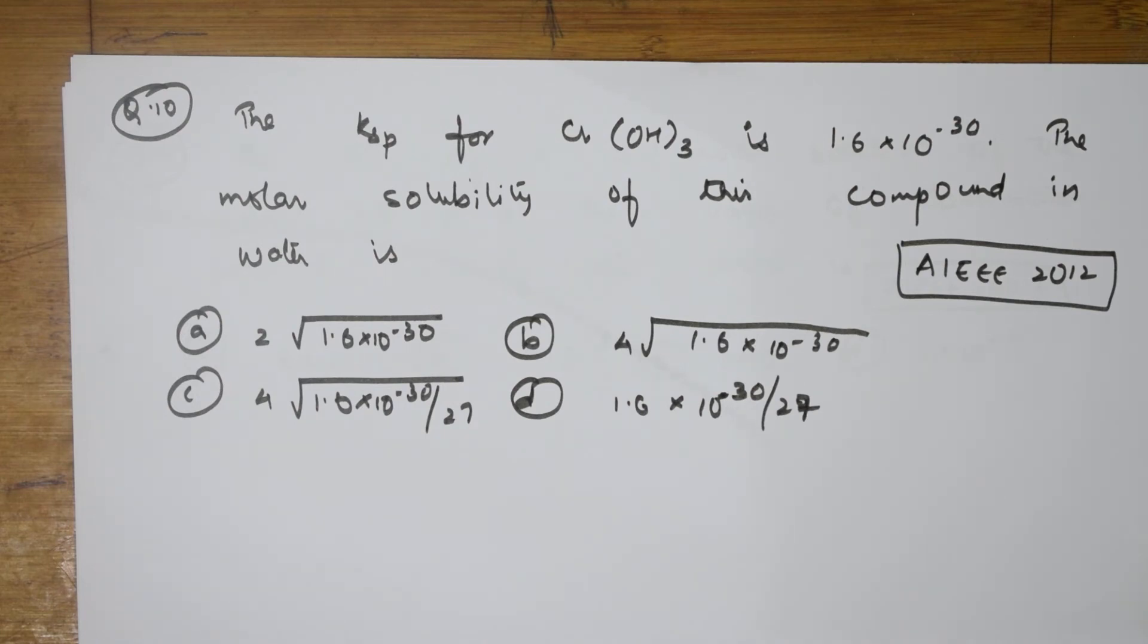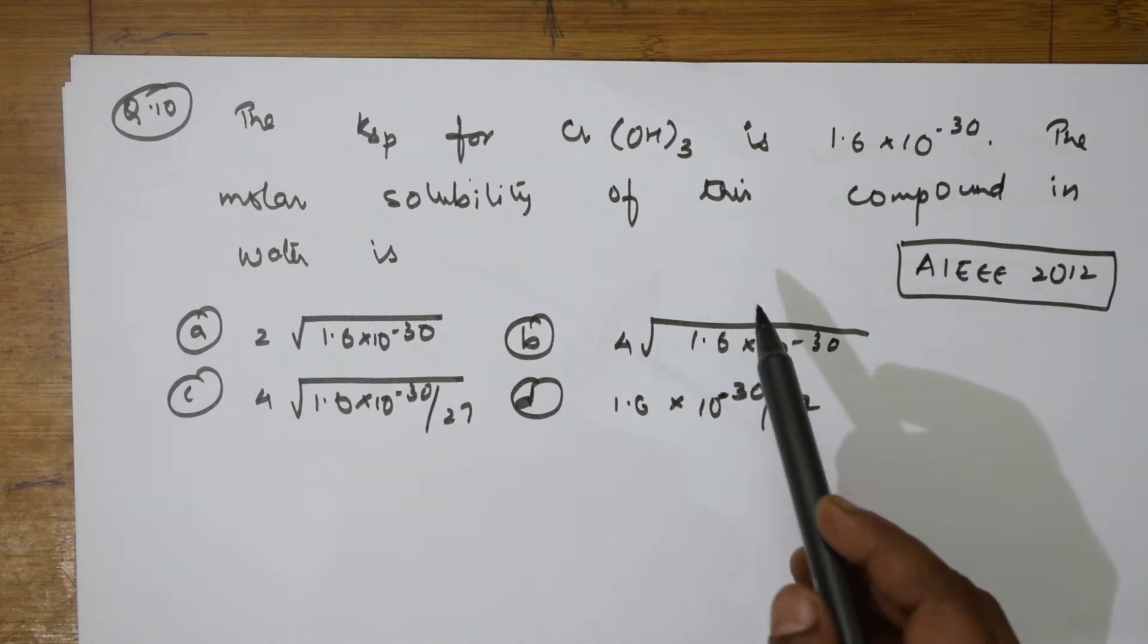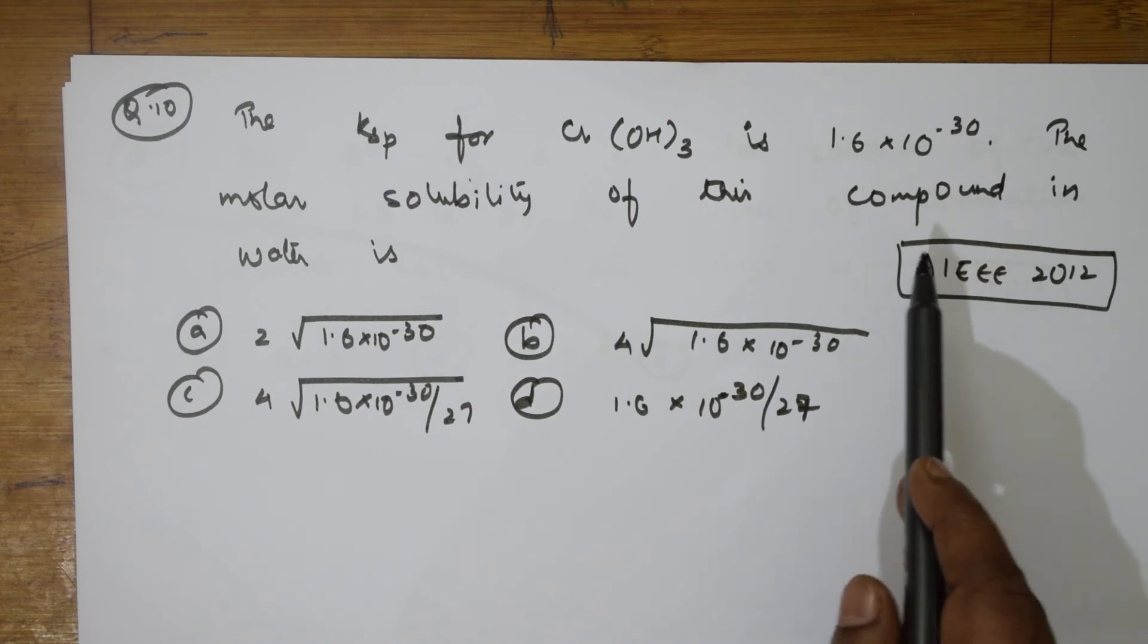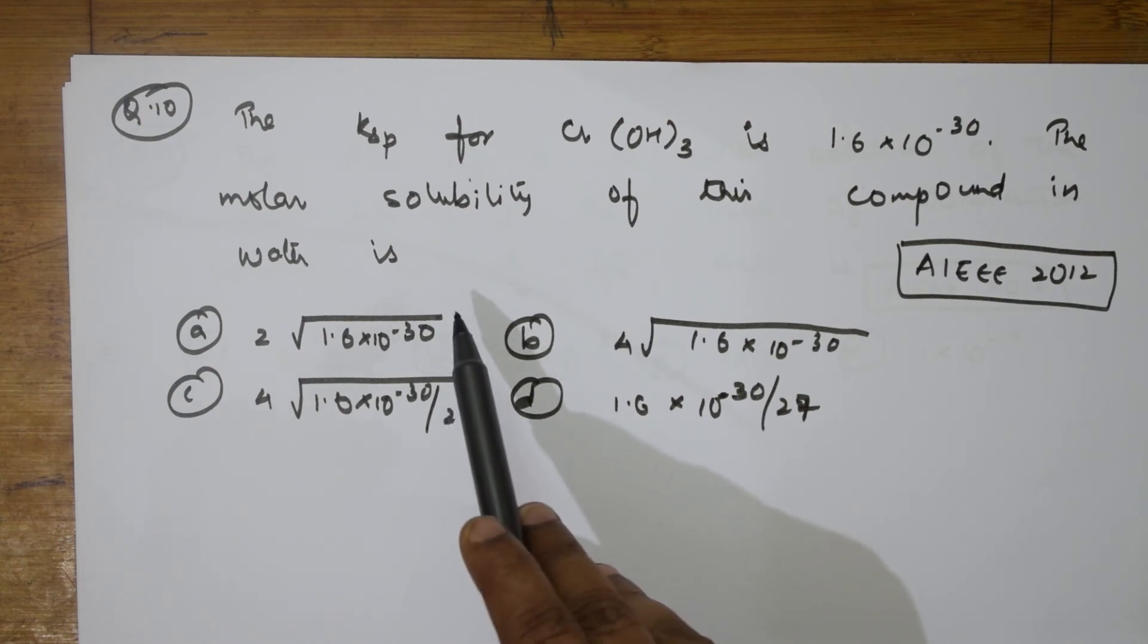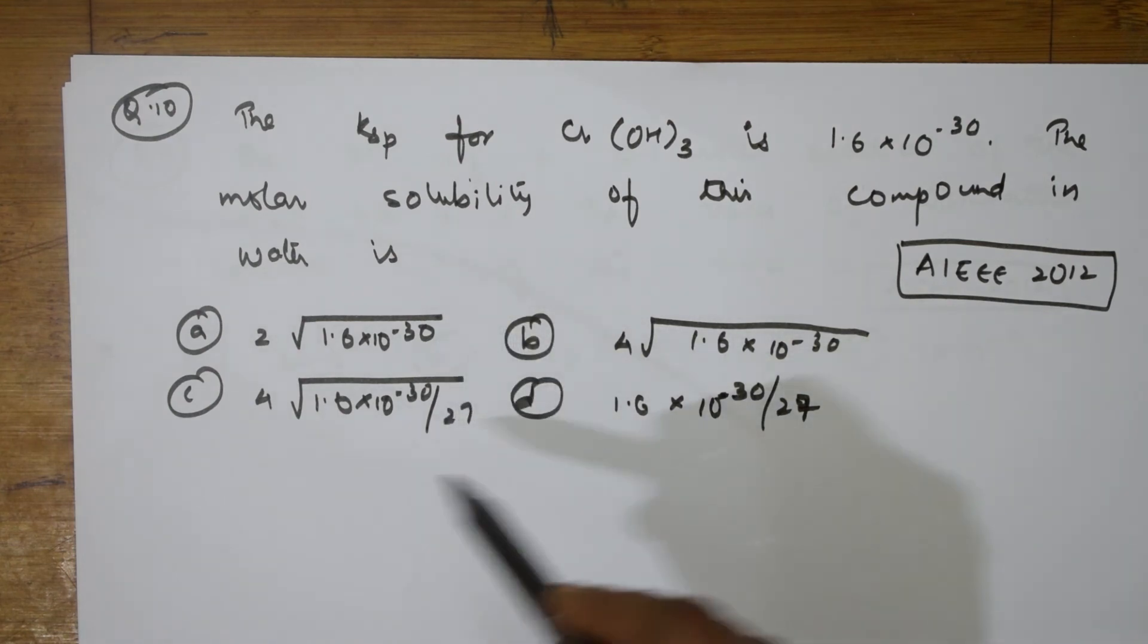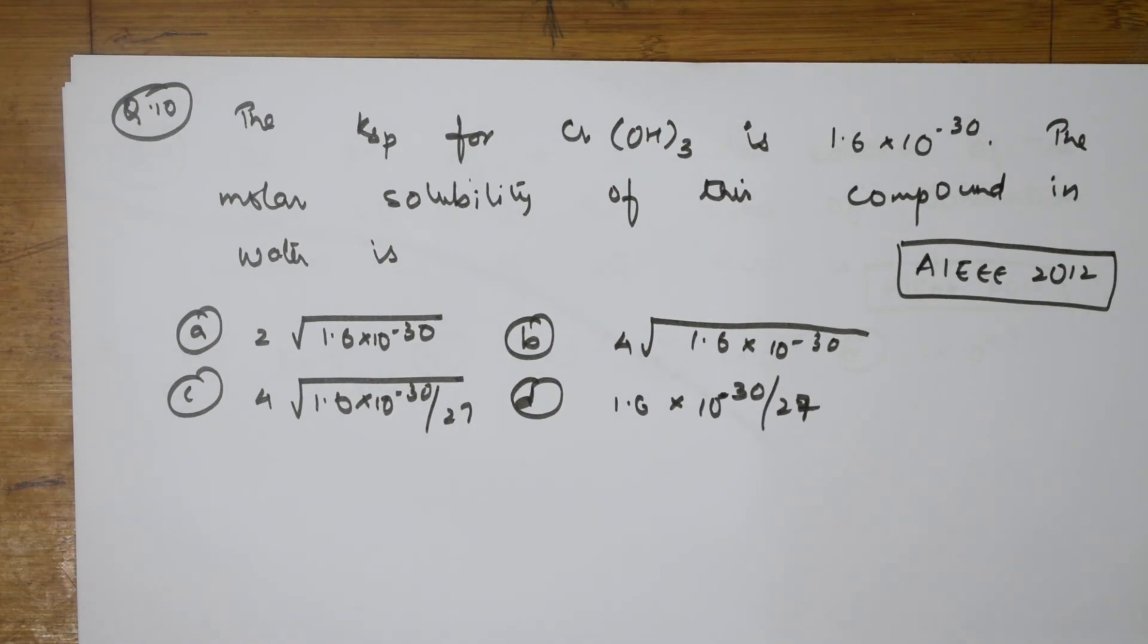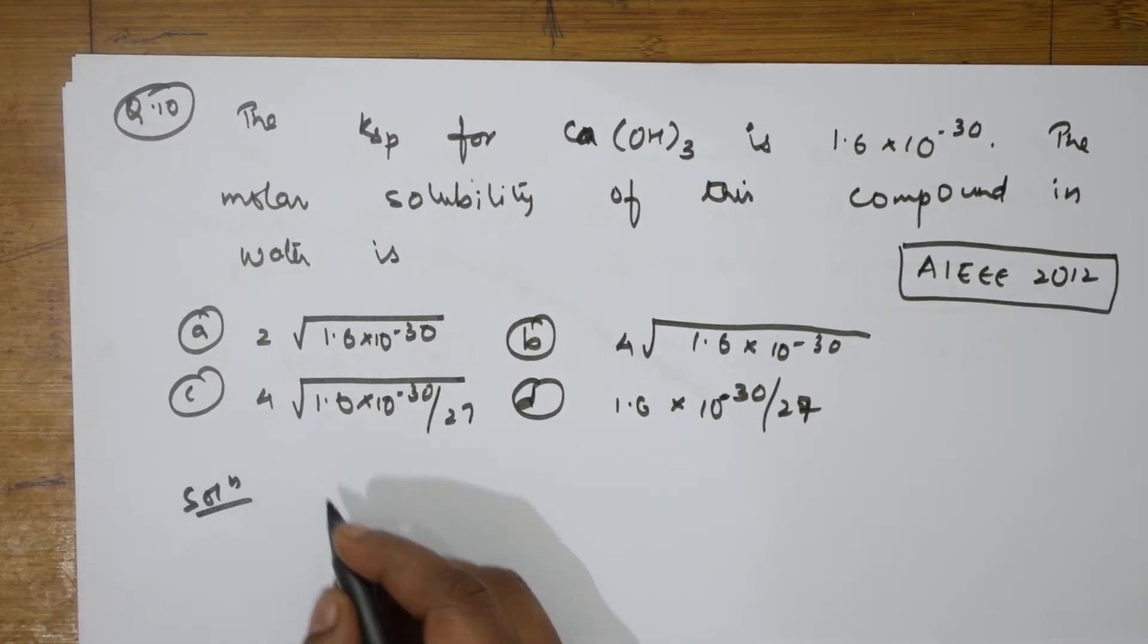Now, the Ksp again, a solubility product question is given to us. Now solubility of chromium hydroxide taken thrice. They have given us chromium complex solubility is 1.6×10^-30. And then the molar solubility of their compound in water. What is the molar solubility of the compound in water? They have given us A, B, C, D options. Now, let us see. I need to find the molar solubility of the compound.